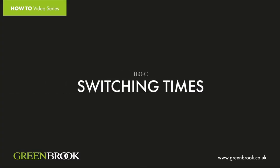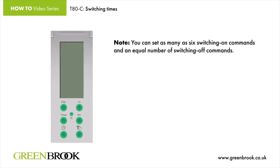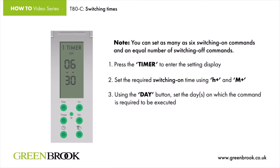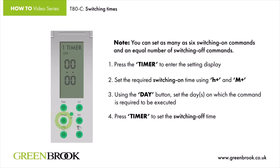Switching Times. Note: you can set as many as six switching on commands and an equal number of switching off commands. 1. Press the timer to enter the setting display. 2. Set the required switching on time using H Plus and M Plus. 3. Using the Day button, set the days on which the command is required to be executed. 4. Press timer to set the switching off time.